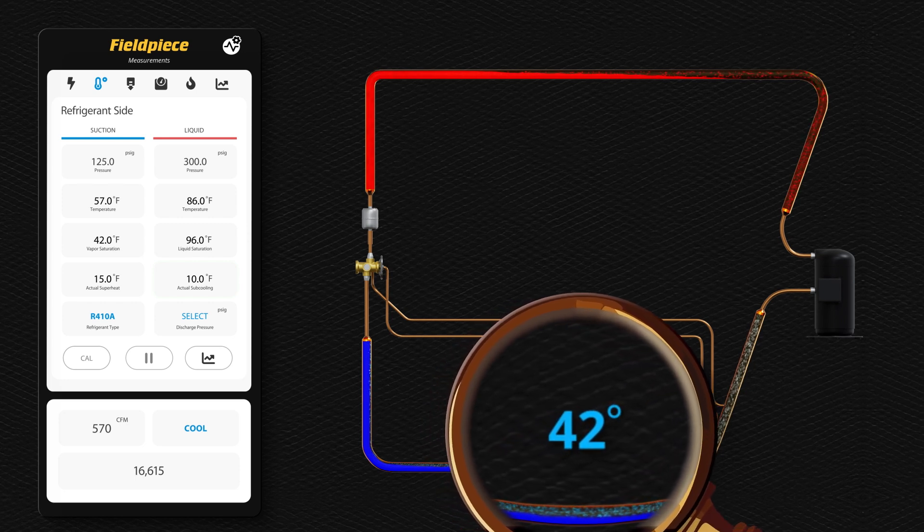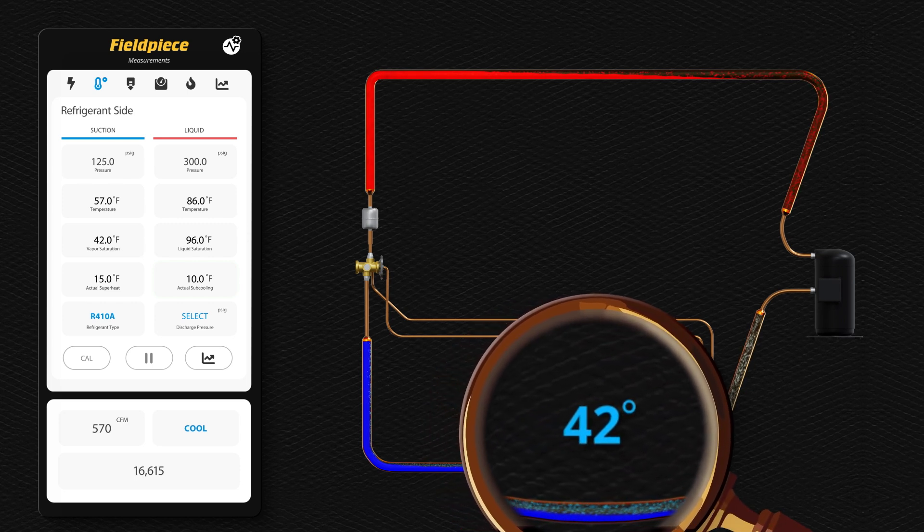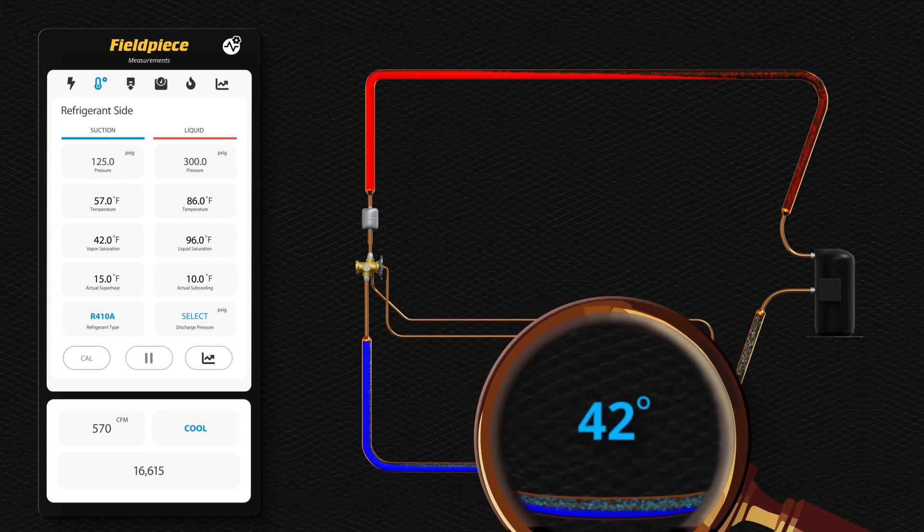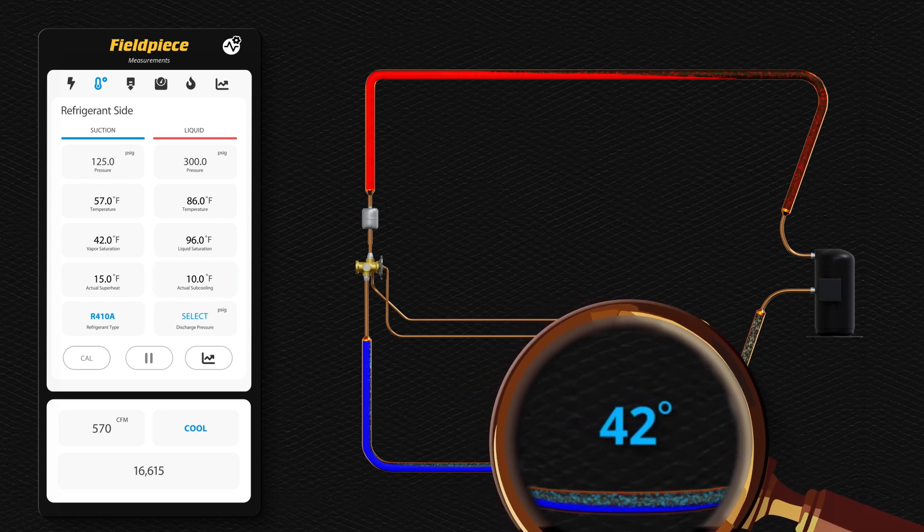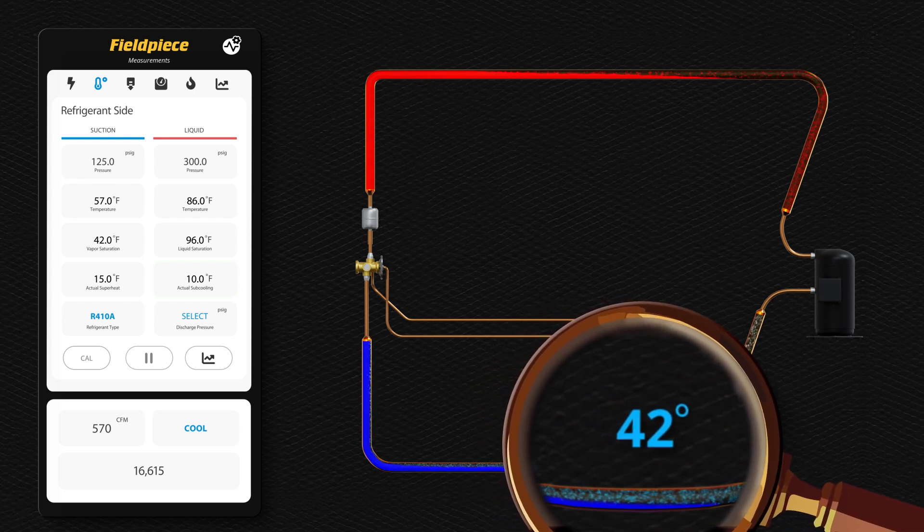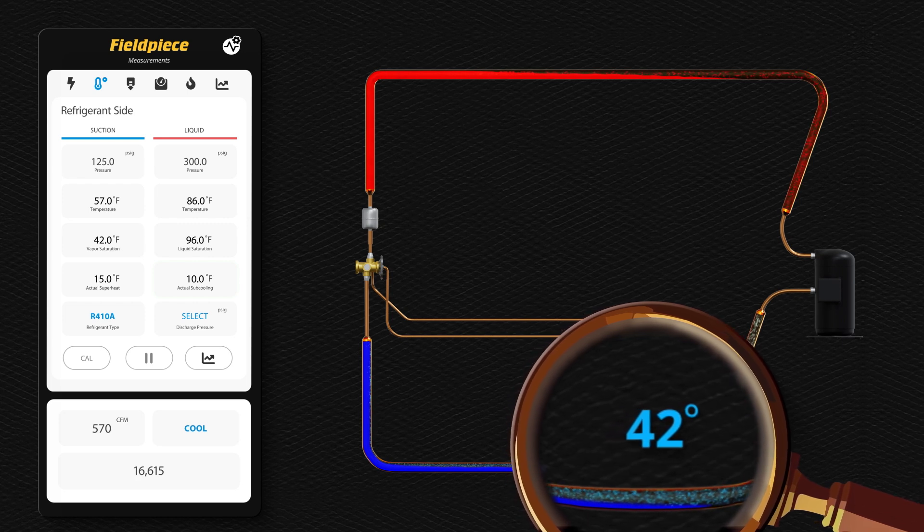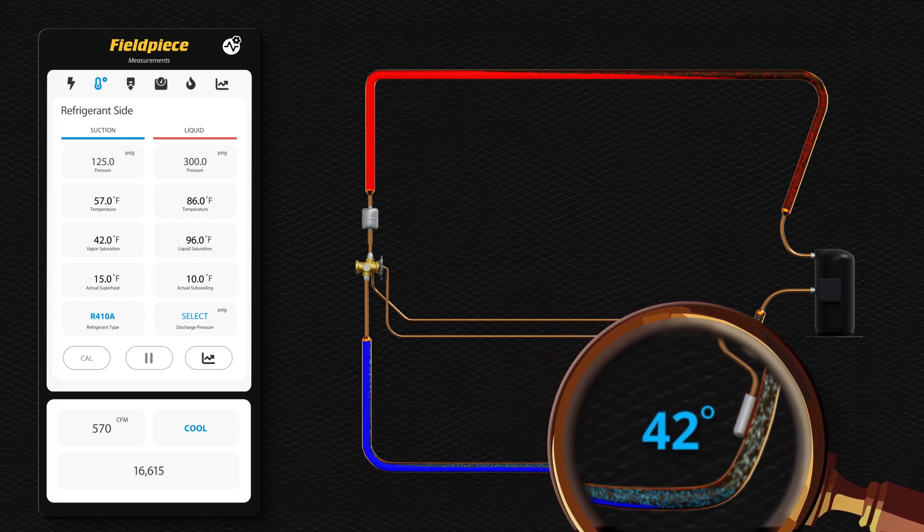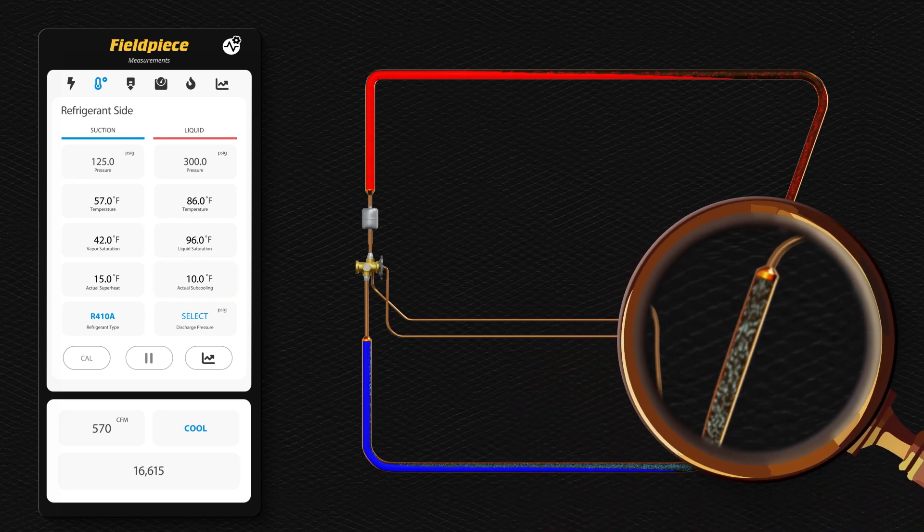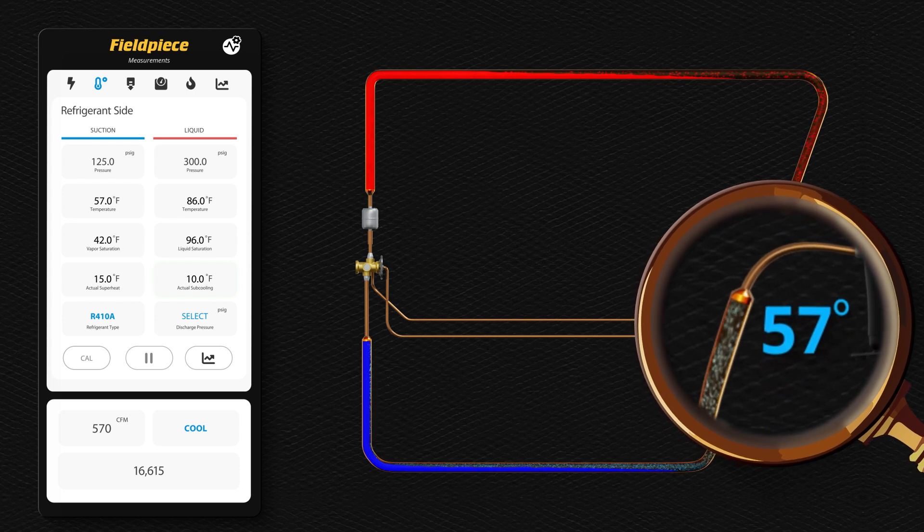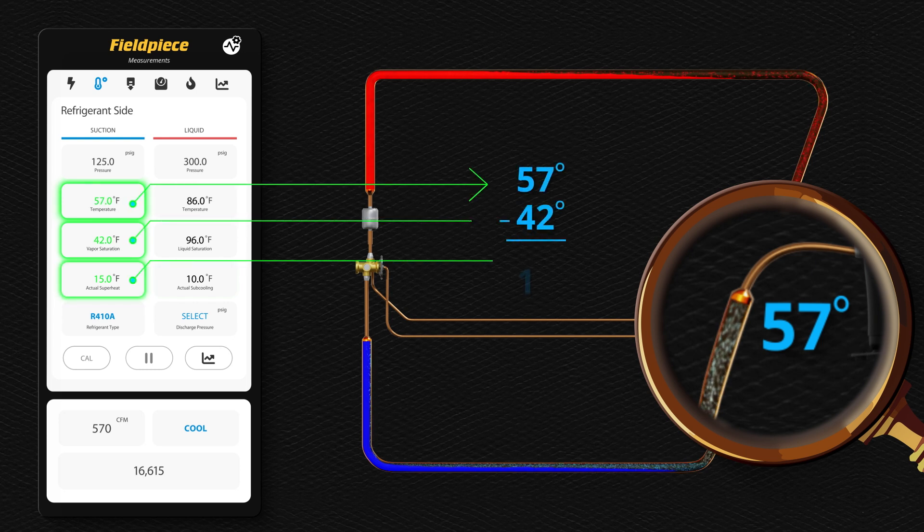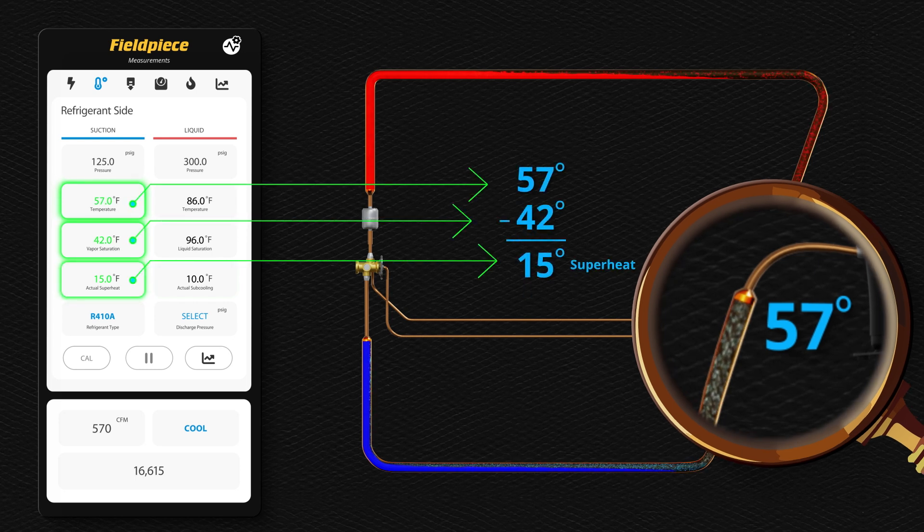As the refrigerant travels further through the circuit, the saturated temperature will remain at 42 degrees, but when the refrigerant leaves the evaporator, travels through the vapor line to the condenser, the temperature of the vapor line at the condenser is 57 degrees. Since the refrigerant is above the saturated temperature by 15 degrees, the refrigerant is 100% vapor with 15 degrees of superheat.